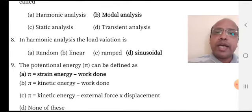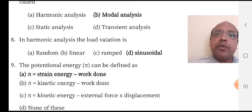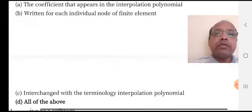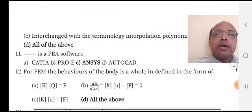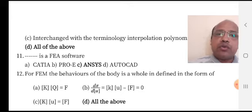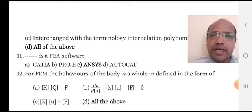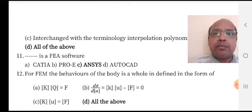The potential energy can be defined as strain energy minus work done. If the kinetic energy is maximum, then strain energy equals work done, and at that time potential energy is zero. ANSYS is FEA software. CATIA, PROE, and AutoCAD are not pure FEA software. In CATIA and PROE, only static analysis provision is there, but ANSYS is a pure finite element analysis software.